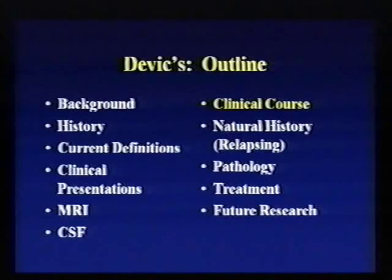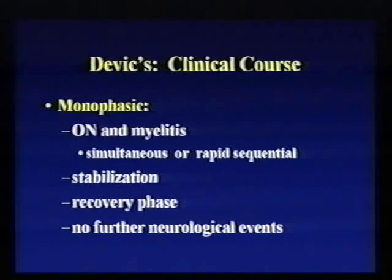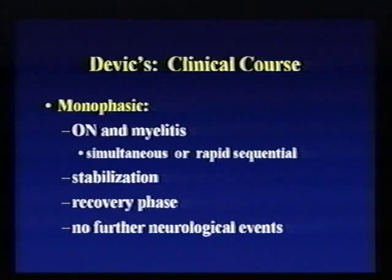The clinical course is something those of us interested in Devic's syndrome are particularly interested in predicting. We believe there are two main types: monophasic and relapsing. In the monophasic type, people have both optic neuritis and transverse myelitis that usually occurs quite rapidly — in a two-week period they might experience optic neuritis and transverse myelitis, possibly in both eyes. There's a period of stabilization, then a recovery phase where most get some recovery, followed by a remission with no new events over many years of follow-up. We call this monophasic — one event.